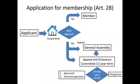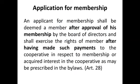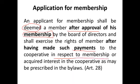If the general assembly disapproves the appeal, that decision is final. If you appeal to the appeal and grievance committee and they deny it, you can still go to the general assembly — but the decision of the general assembly is final. The legal basis is Article 28 of RA 9520: an applicant for membership shall be deemed a member after approval by the board of directors, but cannot exercise rights unless payment to the cooperative in respect to membership has been made or interest has been acquired as prescribed in the bylaws.